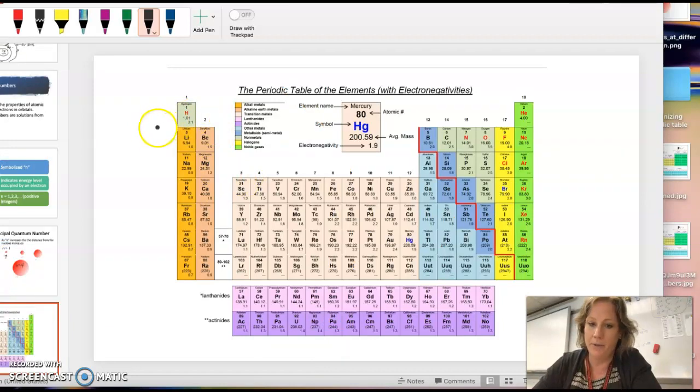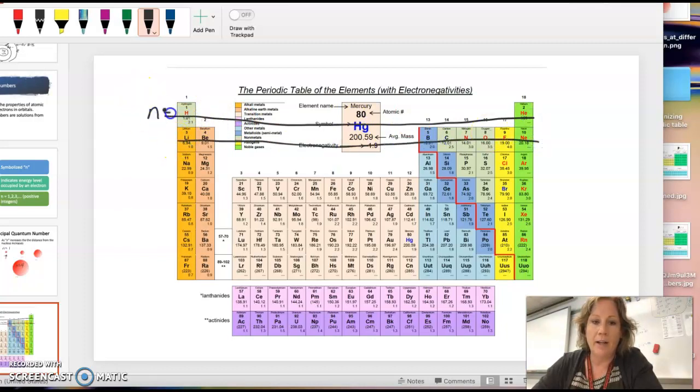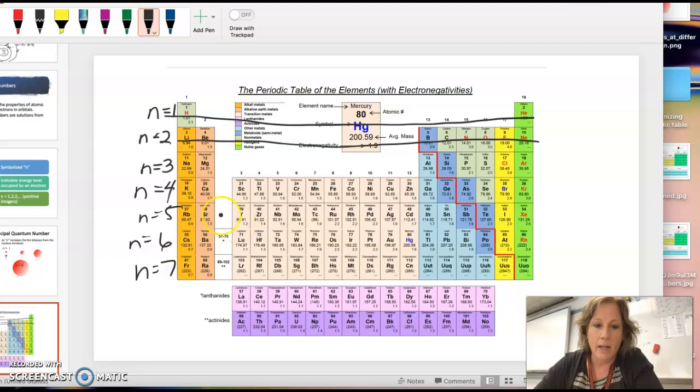N can be determined by using the periodic table. If I read these going across, these rows or periods, the first row is N equals 1. I would label this on your periodic table. You can pause me and go grab it. N equals 4, 5, 6, and 7. And remember, right here, that's really this. So this is really N equals 6 and N equals 7.